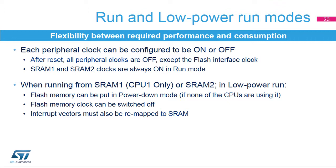Each peripheral clock can be configured to be on or off in run and low-power run modes. By default, all peripheral clocks are off except the flash interface clock. The SRAM1 and SRAM2 clocks are always on in run mode. When running from SRAM1 or SRAM2 in low-power run modes, the flash memory can be put in power-down mode and the flash clock can be switched off. When the flash memory is switched off it must not be accessed, and consequently interrupts must be mapped in SRAM using the Cortex-M4 vector table offset register.